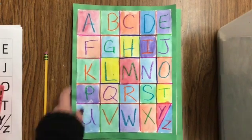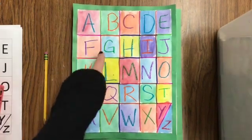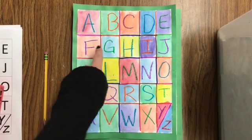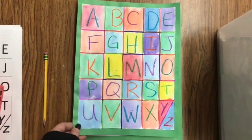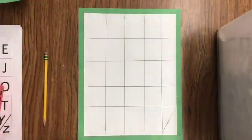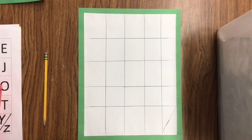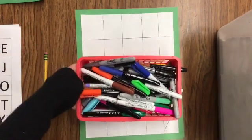All right, today we are using Jasper Johns as our inspiration for our alphabet art. These colored lines are what we're going to be working on today, and then we're going to be writing in our alphabet and preparing it for next week.